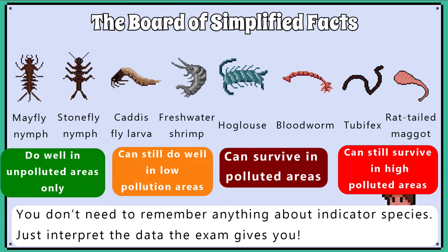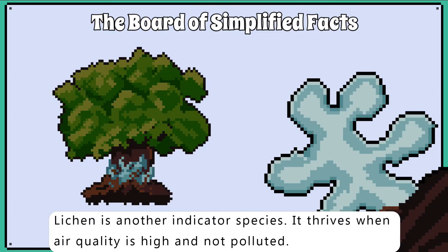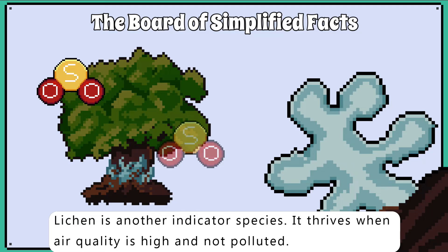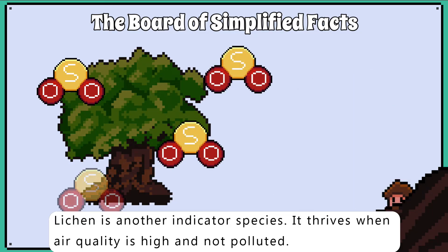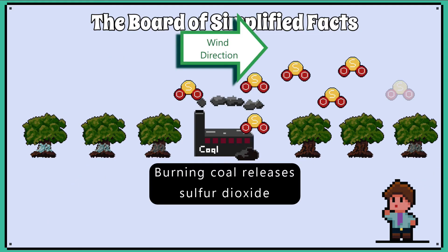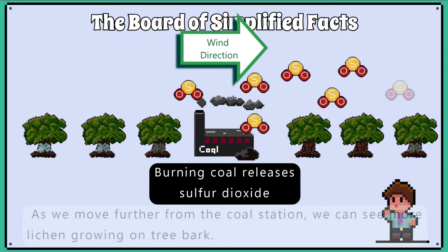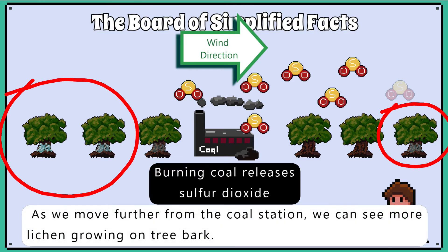You will always be provided with information about what species does well in what conditions in the question. Another example of an indicator species that can be used to determine air quality is lichen. Lichen grows on bark but is very sensitive to sulfur dioxide, and will not thrive if there are high levels of sulfur dioxide in the atmosphere. We can use the data and our knowledge to show that as we move further from the coal station, we can see more lichen growing on tree bark.